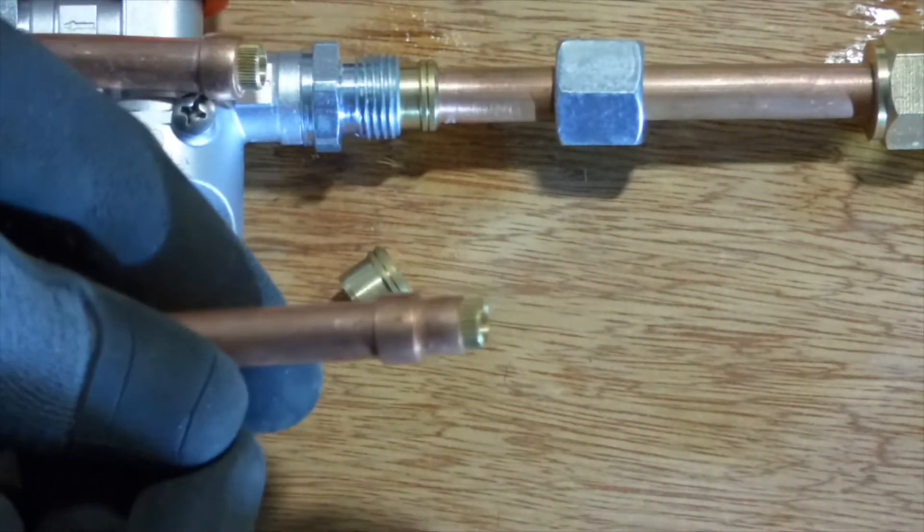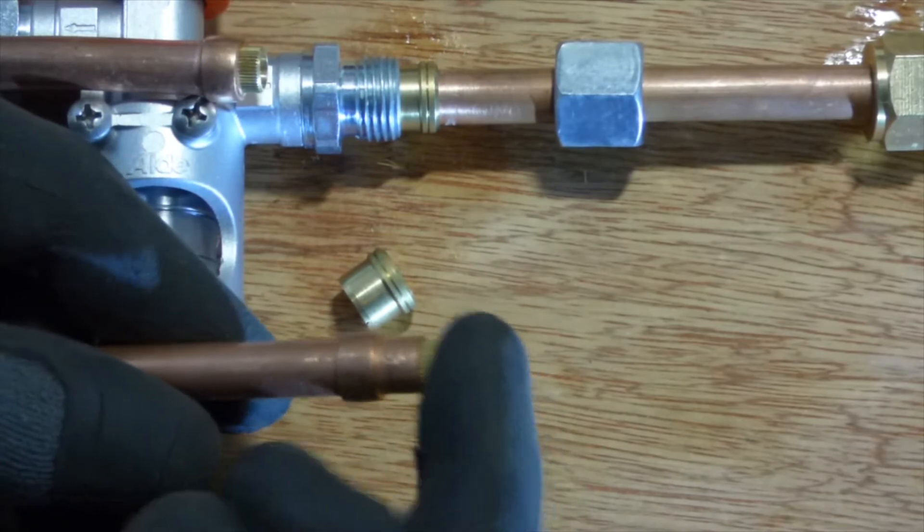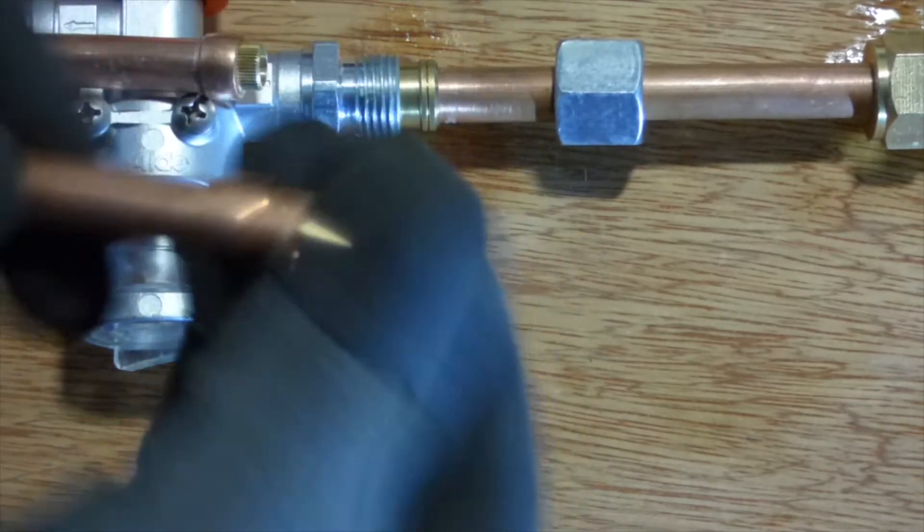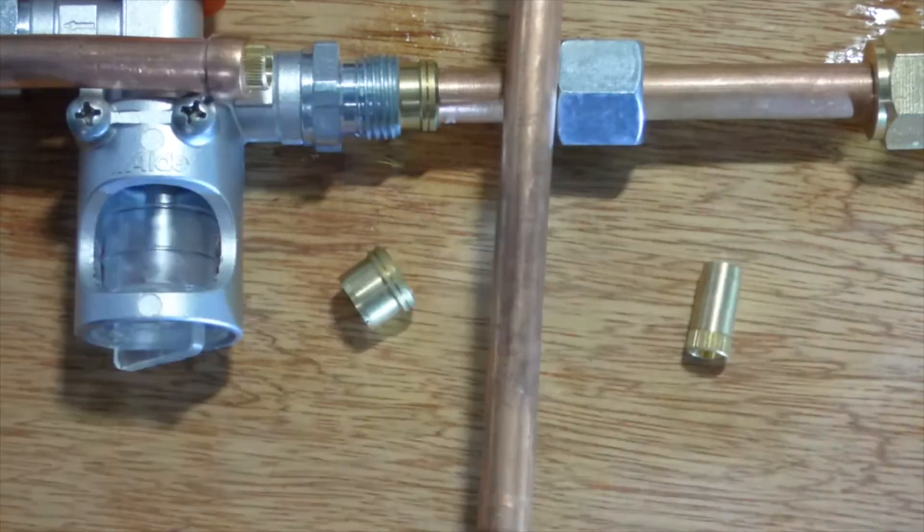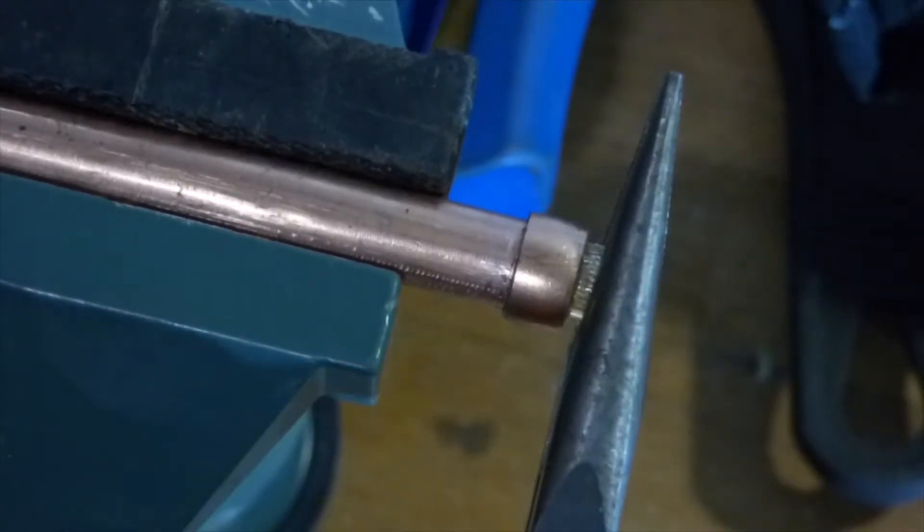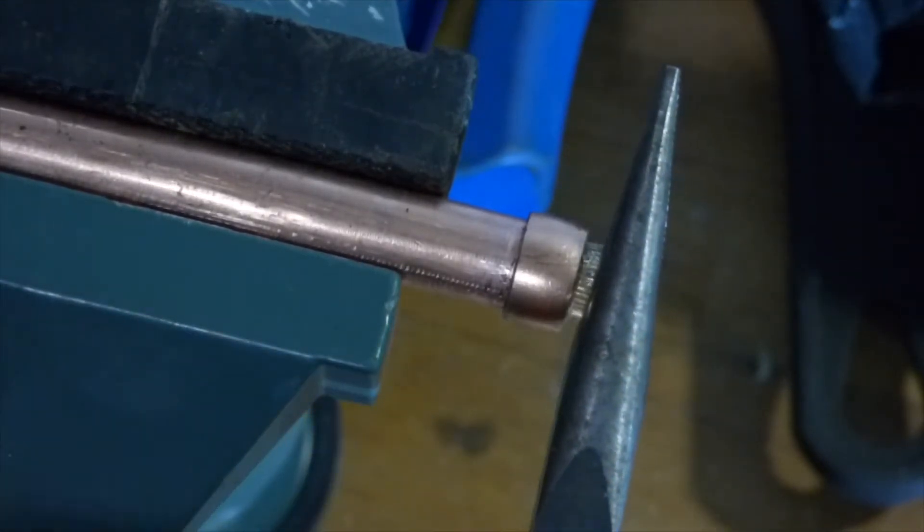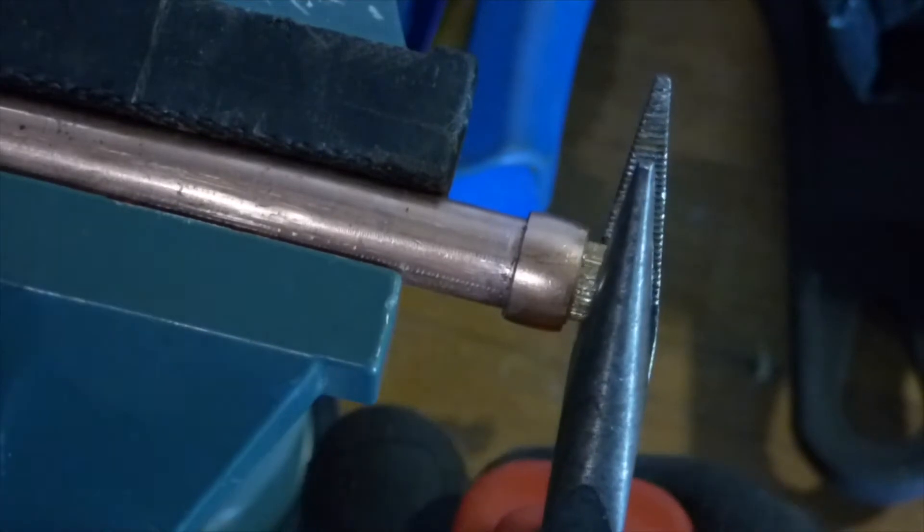That piece, at the end there, doesn't push in all the way on the 3/8th pipe. So that's actually spinning within the pipe. That's not gas tight.